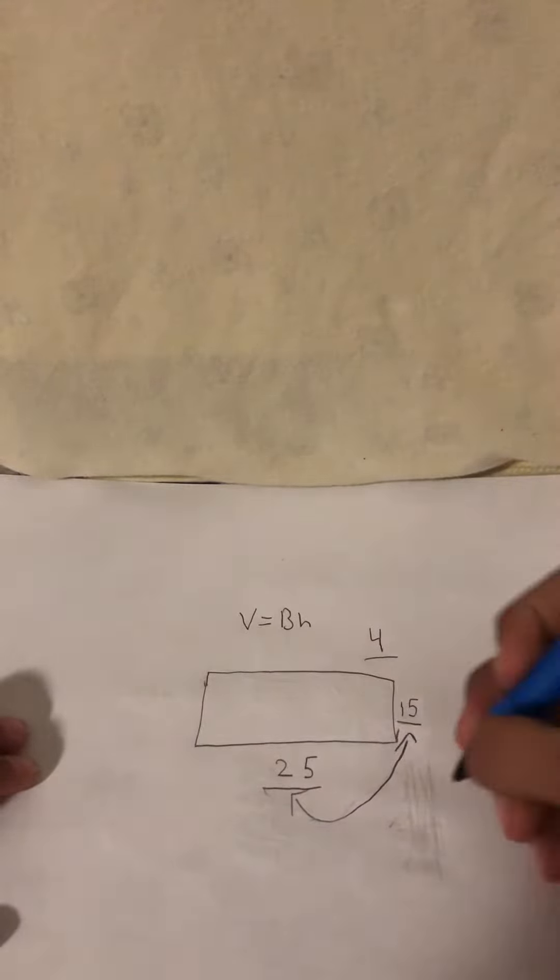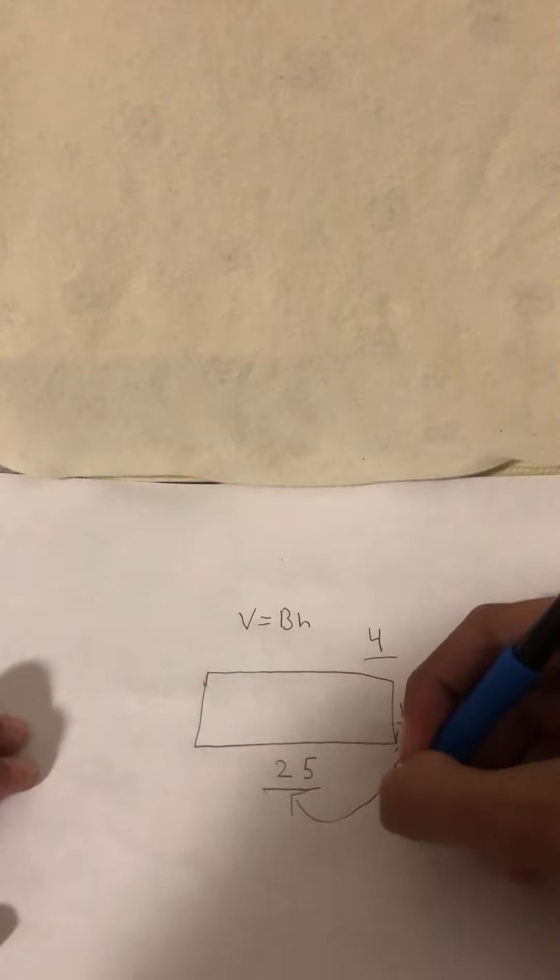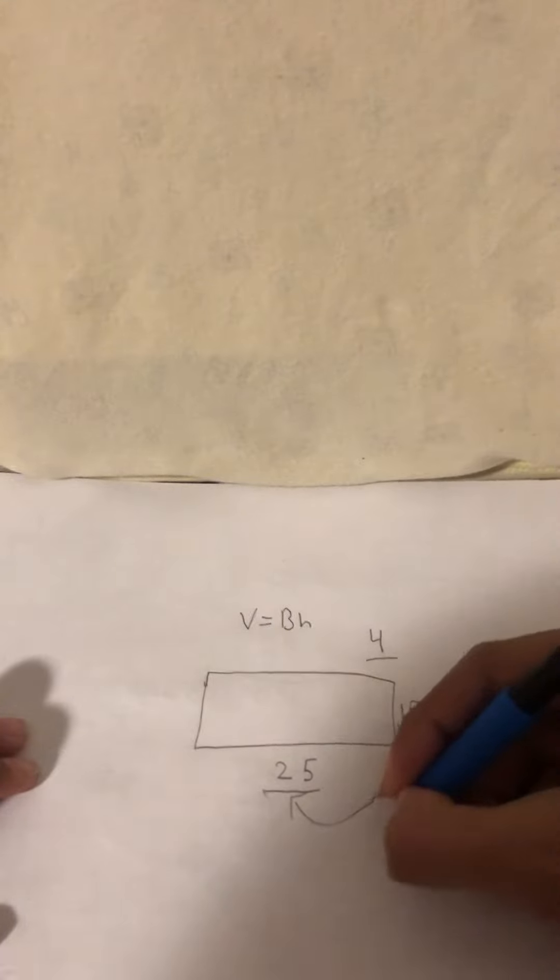15 and 25. So what we want to do is multiply those two numbers: 25 times 15.